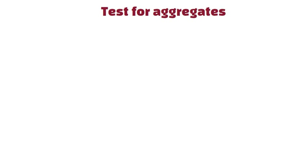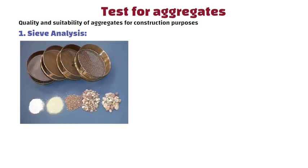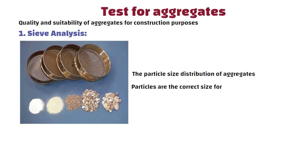Soil Strength Tests for Aggregates: From these tests, we can check the quality and suitability of aggregates for construction purposes. 1. Sieve Analysis: This test is used to determine the particle size distribution of aggregates. It helps ensure that the particles are the correct size for the specific concrete mix.